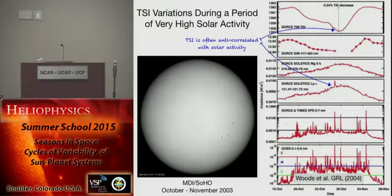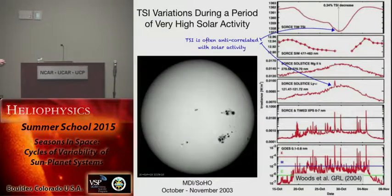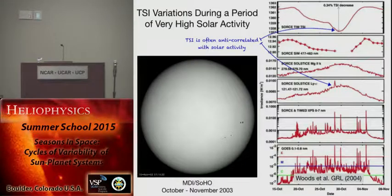That competition between sunspot darkening and facular brightening is also one of the reasons why the variability is so small. In general, you get very small modulation in the irradiance even when you have very large changes in activity. Here are some soft X-ray measurements where you can see orders of magnitude changes.